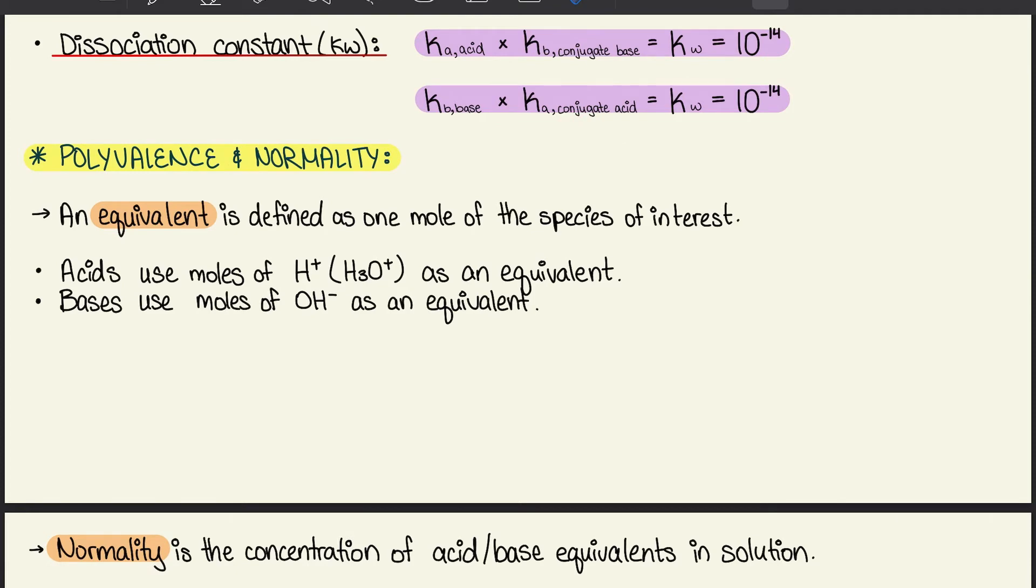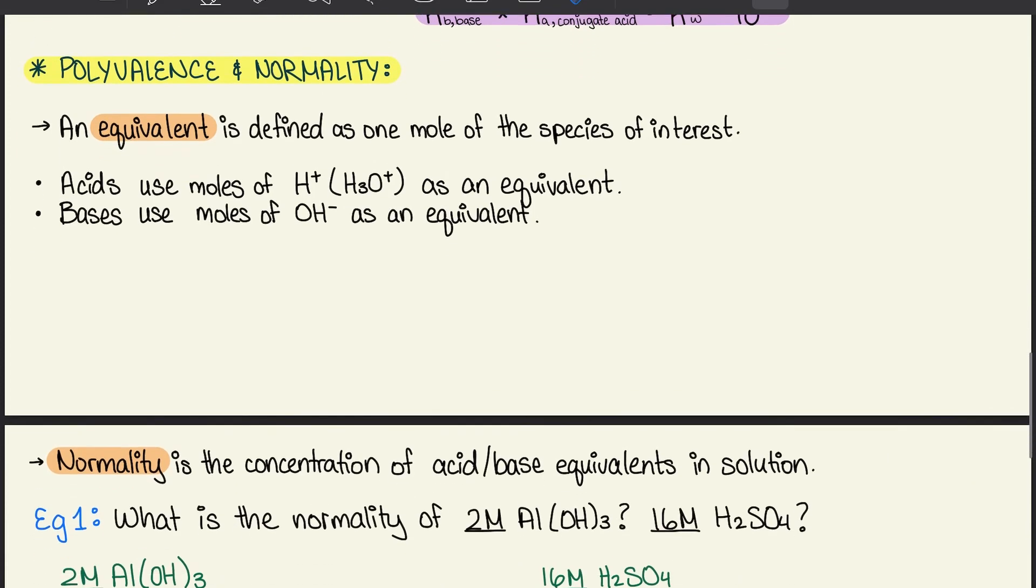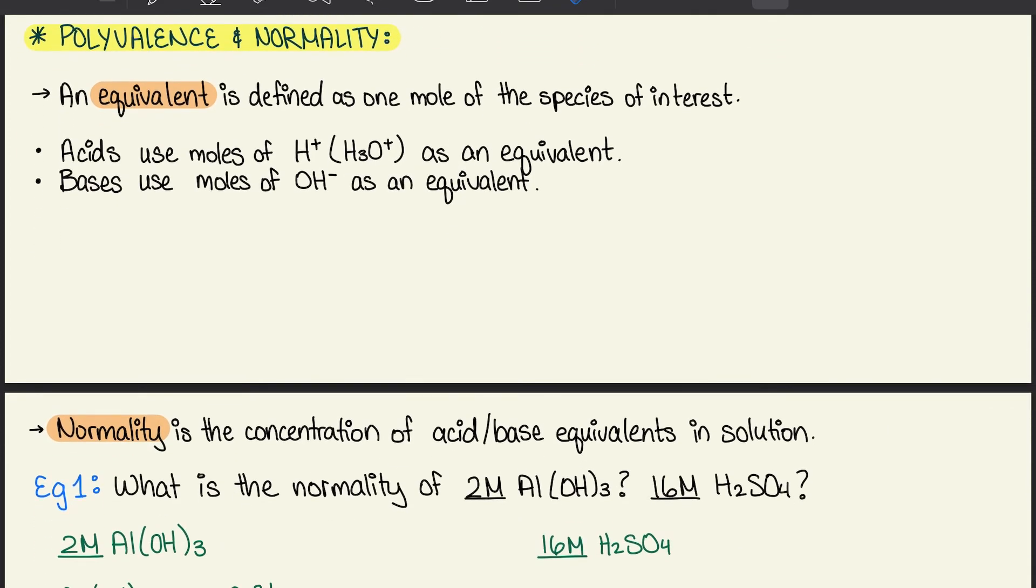Next we move on to chapter 10.3, where we talk about polyvalence and normality. An equivalent is defined as one mole of the species of interest. Acids use moles of hydrogen ion as an equivalent, and bases use moles of hydroxide ions as an equivalent.